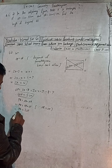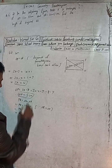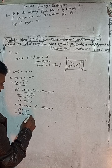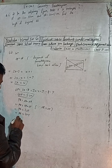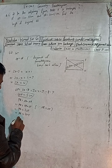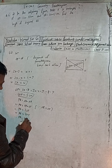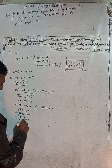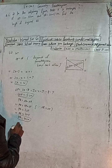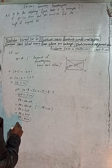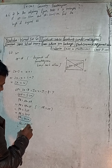Therefore PR is equal to 2 into OP, and OP is equal to 5, so PR equals 2 times 5, which is 10 cm. Therefore QS is equal to PR.